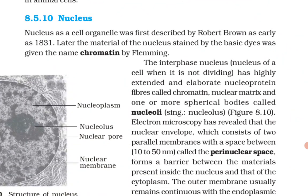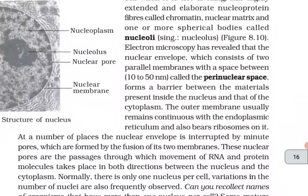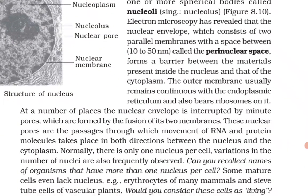Nucleus: the nucleus as a cell organelle was first described by Robert Brown as early as 1831. Later, the material of the nucleus stained by basic dyes was given the name chromatin by Flemming. The interphase nucleus of a cell when it is not dividing has highly extended and elaborate nucleoprotein fibers called chromatin, nuclear matrix, and one or more spherical bodies called nucleoli. Electron microscopy has revealed that the nuclear envelope consists of two parallel membranes with a space between them (10–50 nm) called the perinuclear space, forming a barrier between materials inside the nucleus and the cytoplasm.